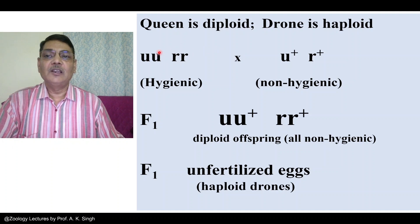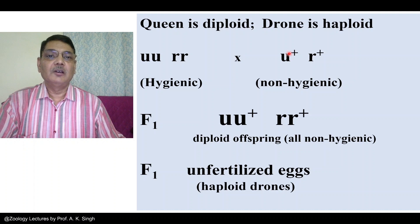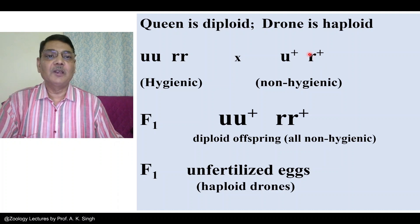If both alleles are wild type — U-plus and R-plus — then a male individual with this genotype will be considered non-hygienic, because U-plus does not enable the individual to uncap the cell. And if the R-plus allele is present, then the worker will not be able to remove the larvae.